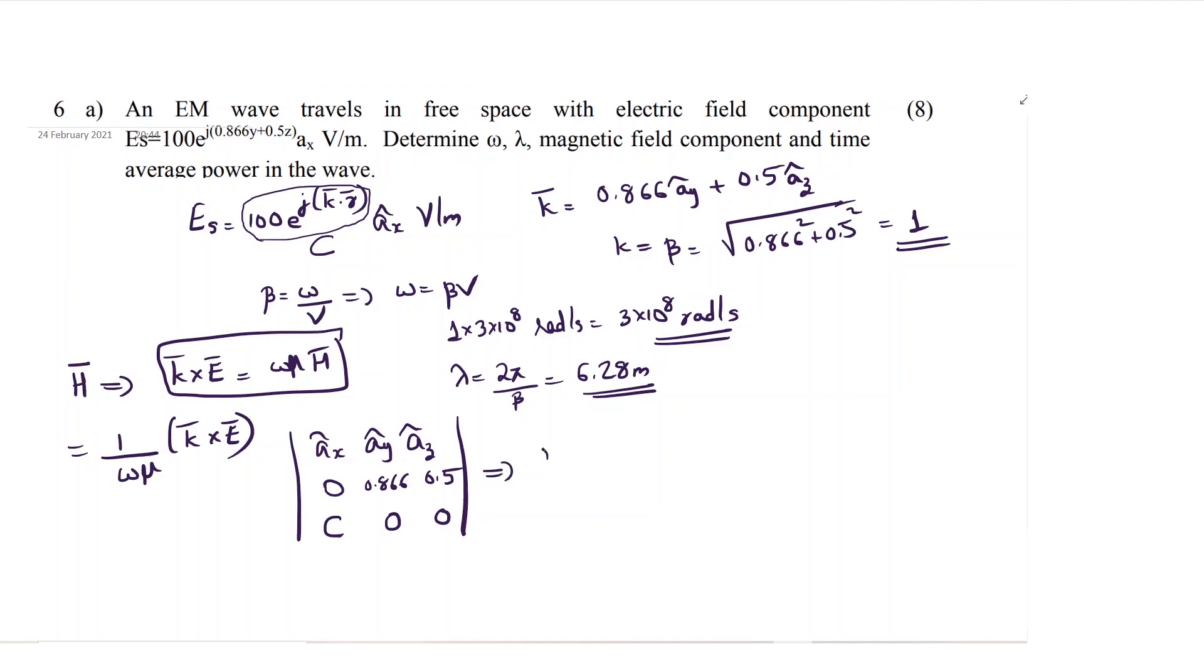You will be getting ax into, there is no x component, then ay into 0.5 c minus 0 plus az into, again this minus, so minus 0.866 c.